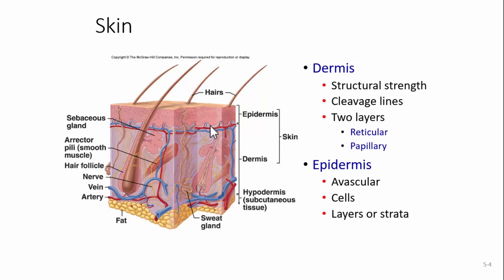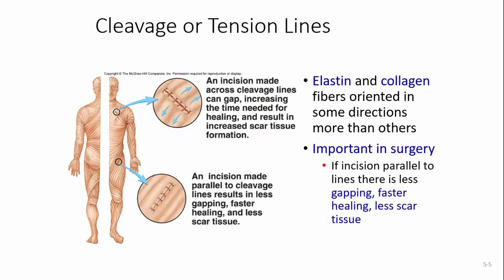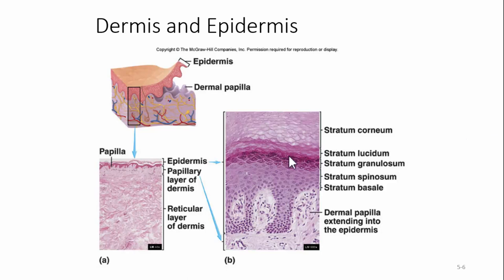The reason we have all these papilla is to increase surface area, so these lower layers are able to get the nutrients and oxygen they need. The layers above start to die off until we get to the top, and this is all basically dead skin. The dermal papilla kind of looks like one of those egg crate foams, and the epidermis when you peel it away almost looks like a thinner egg crate foam set on top. Again, this increases surface area.